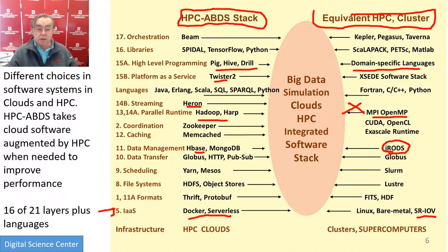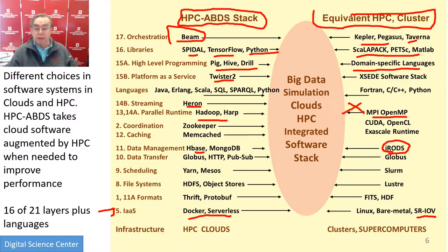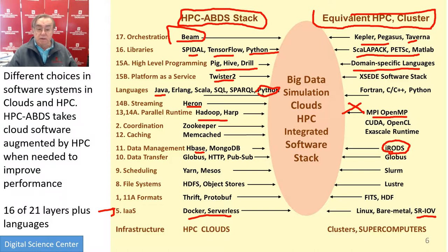High-level programming is Pig or Hive or Drill from the big data side — it's the main languages on the cluster side. Platform as a Service includes our own system Twister2, but there are endless examples at level 15B in the big data space. Orchestration is Google Cloud Dataflow, which is Apache Beam, and on the cluster side you have Kepler, Pegasus, Taverna. Libraries include our own Spatial Big Data library, TensorFlow, and Python has lots of libraries. Libraries are very important in the HPC side — Matrix, Sparse Matrix, and the many libraries MATLAB has. Languages are also a little different: C, C++, Python, and Fortran. On the big data case, Python is shared, but you'd also use C and C++, especially if you're Google. But languages like Java, Erlang, Scala, SQL, and SPARQL for querying graph databases are prominent. Coordination — there is nothing on the cluster side, but ZooKeeper for the Apache side allows distributed coordination. Caching is not highlighted in the cluster side, and Memcache is a very famous in-memory caching system for databases.